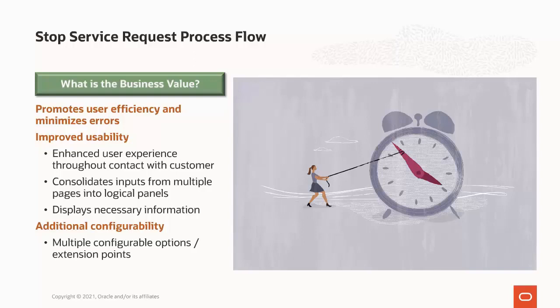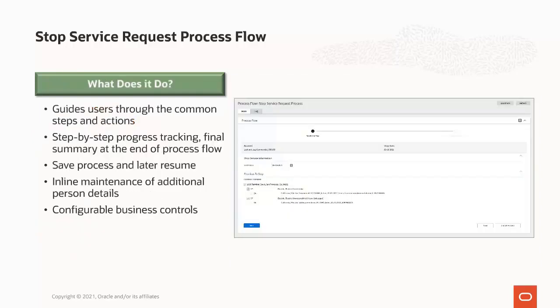The second main driver was additional configurability. There are now multiple configuration options and extension points provided with the new capability to support various business requirements. As mentioned earlier, the new stop service request process flow capability helps call center agents process stop service requests efficiently in a consistent manner by guiding them through the common steps and actions for stopping service.